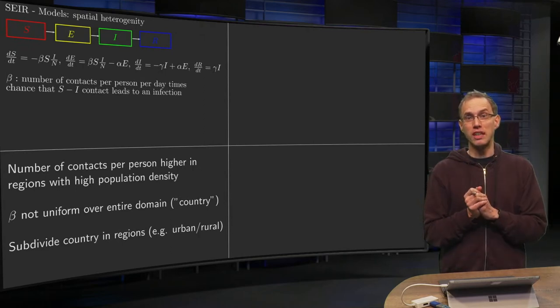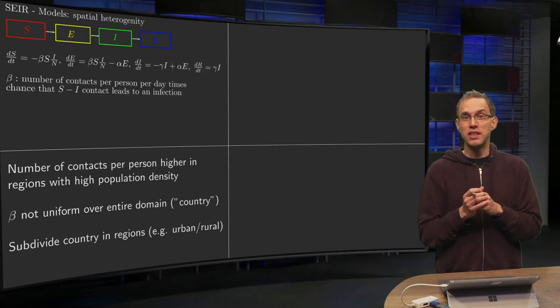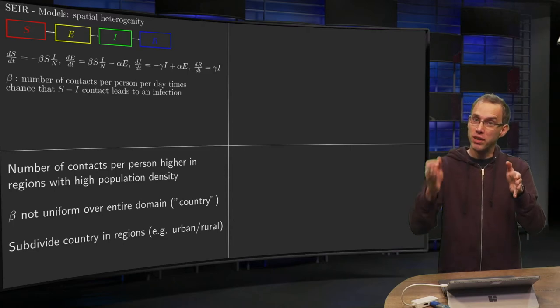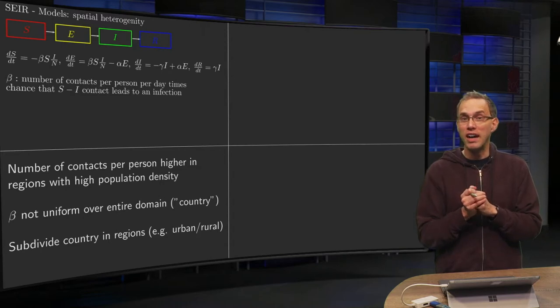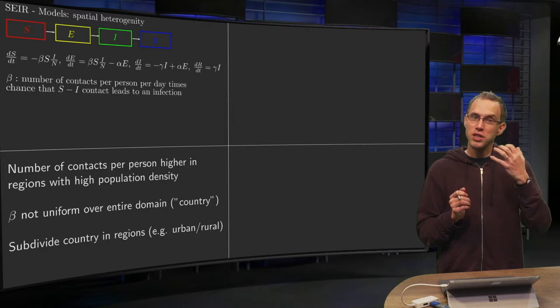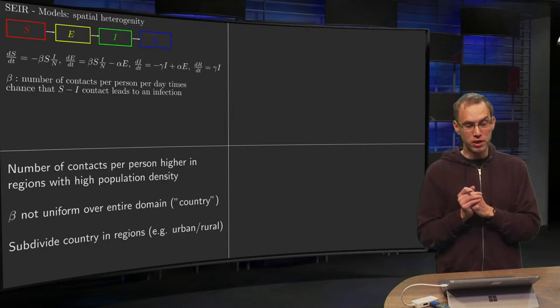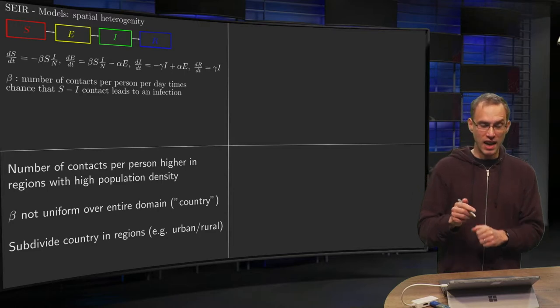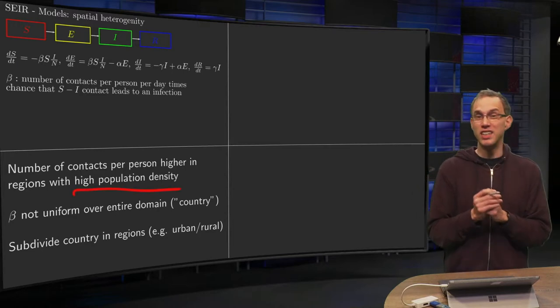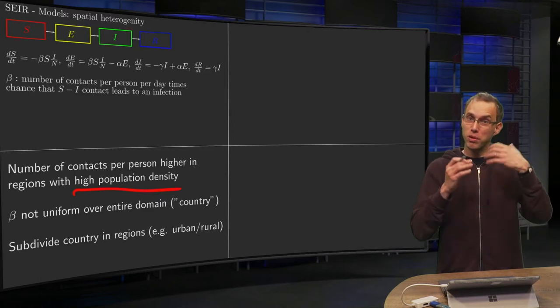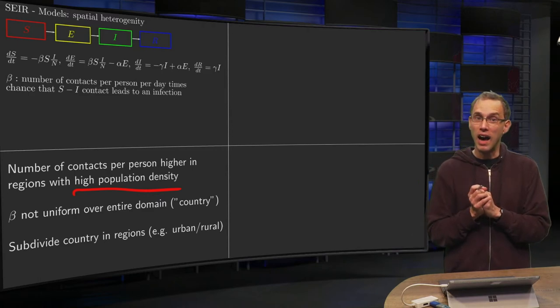However, we will look at the spatial dependence of the first part, the number of contacts per person per day. If you take beta constant, then this number of contacts is basically the same whether you are in the center of Amsterdam or whether you are out there in Siberia, which is probably not such a good assumption. Probably the number of contacts per person per day is higher if the population density of the region is higher.